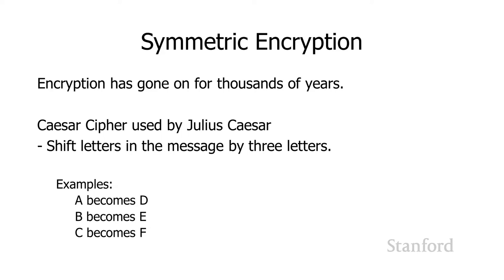The way the Caesar cipher works is we shift letters in the message by three letters. So if I've got the letter A in the original text, I'm going to shift it: A, B, C, D — and instead of writing the A, I'm going to write a D. Instead of writing a B, I shift B, C, D, E — so I write an E instead of a B. I'm going to write an F instead of a C, and so on.